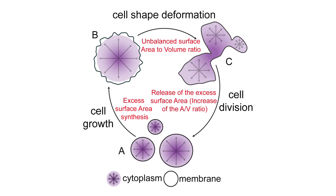We start with newborn L-forms or protoplasts of wild-type cells, and we assume that we start with a balanced area-to-volume ratio. Growth of these cells in an unbalanced manner — with an excess of membrane surface area — leads to buckling and cell-shape distortions. Eventually, blebs of cytoplasm are pinched off, leading to progeny. This is favoured because small cells have a larger area-to-volume ratio than larger cells of equivalent shape, and so excess membrane synthesis drives the continued production of small progeny cells.